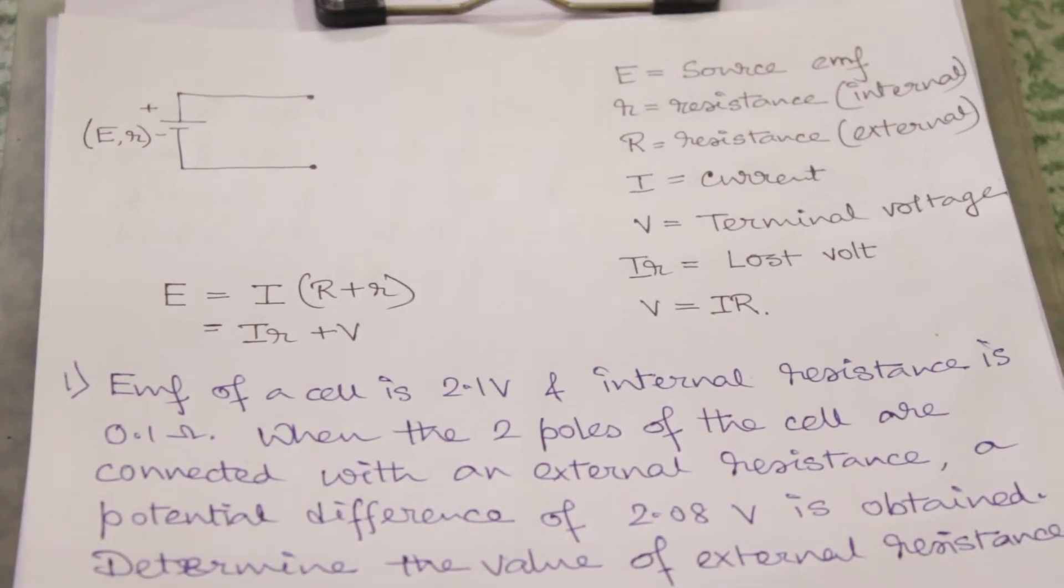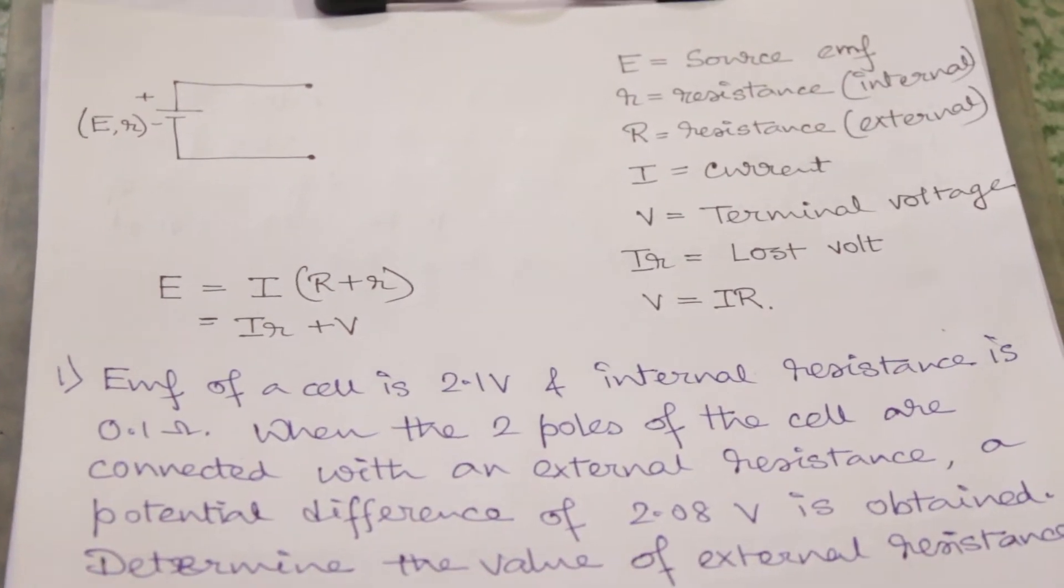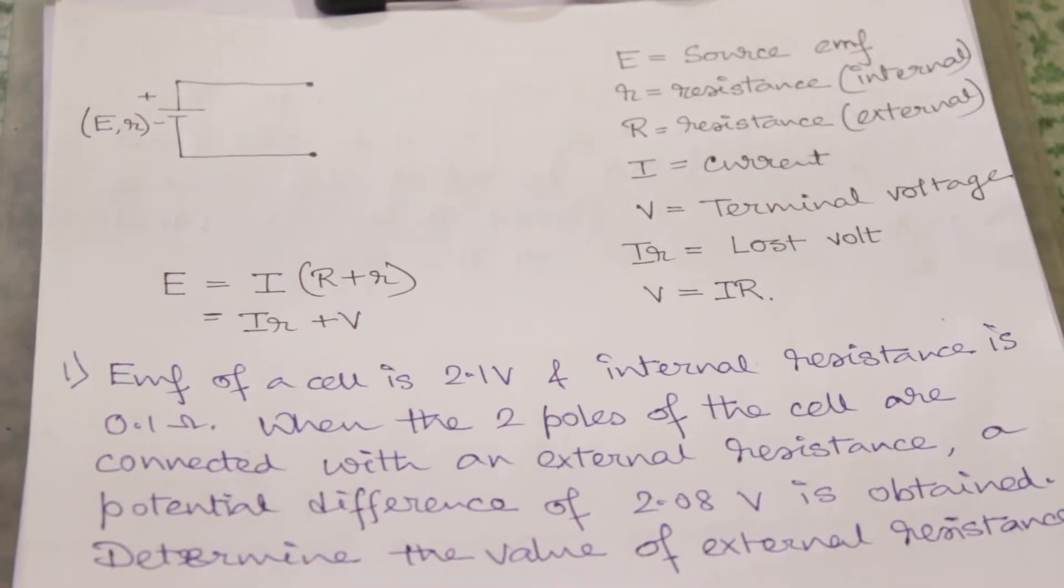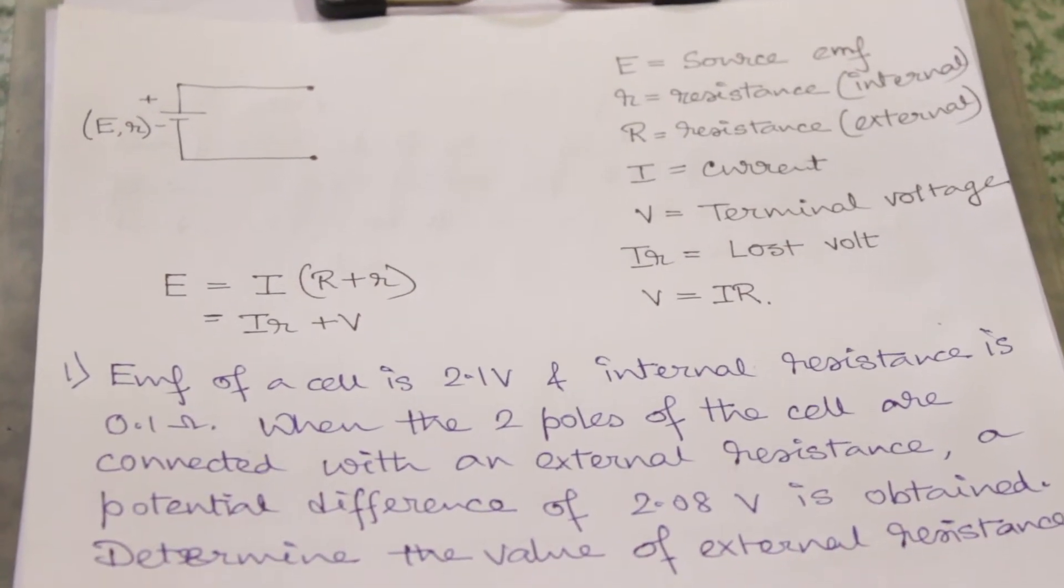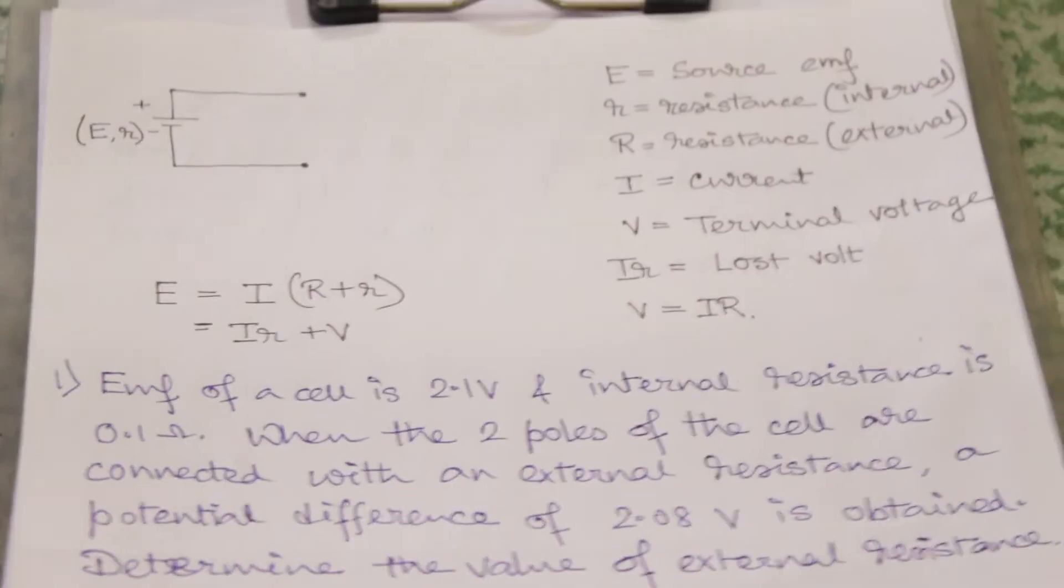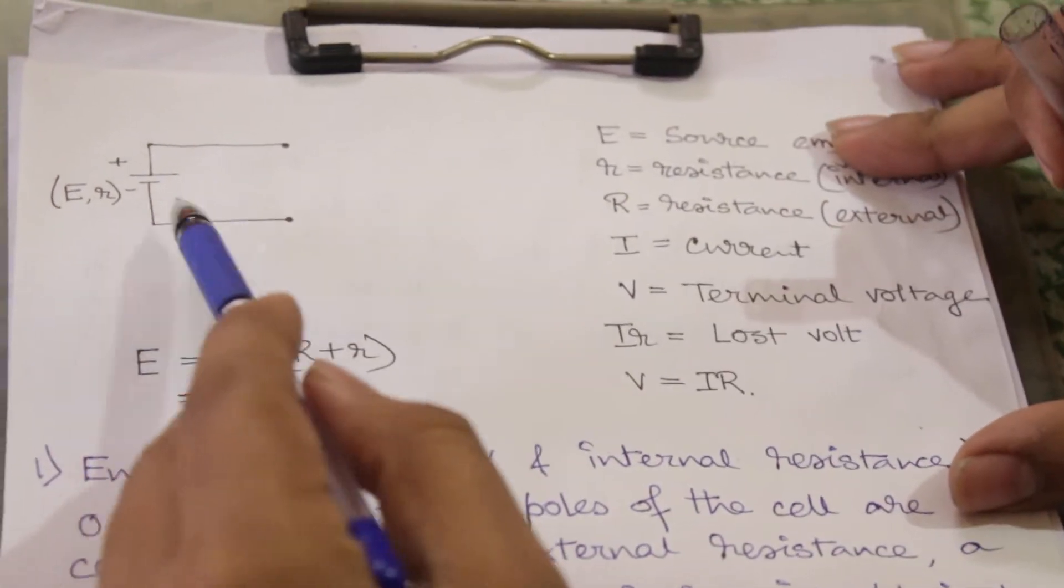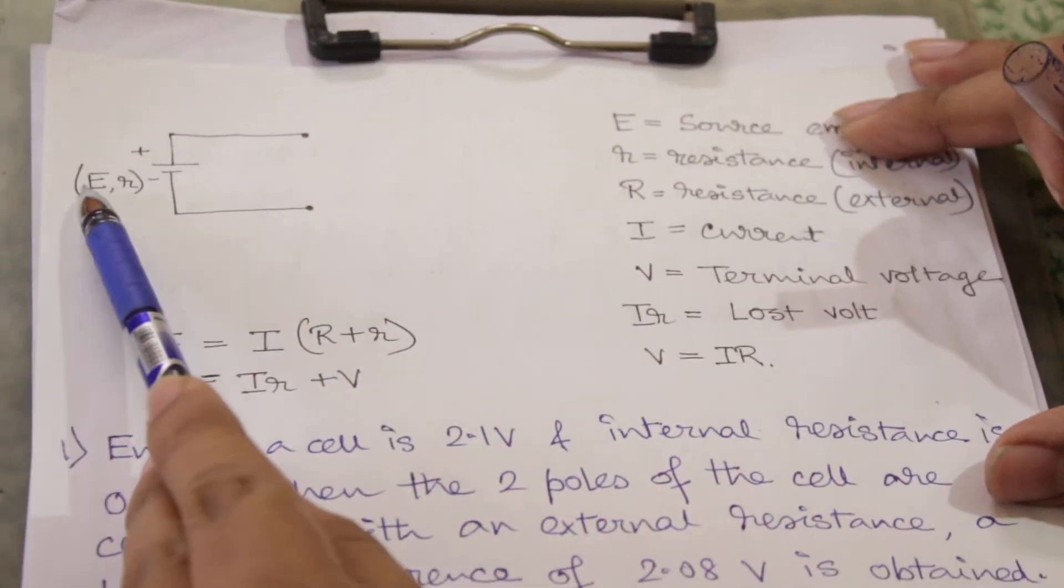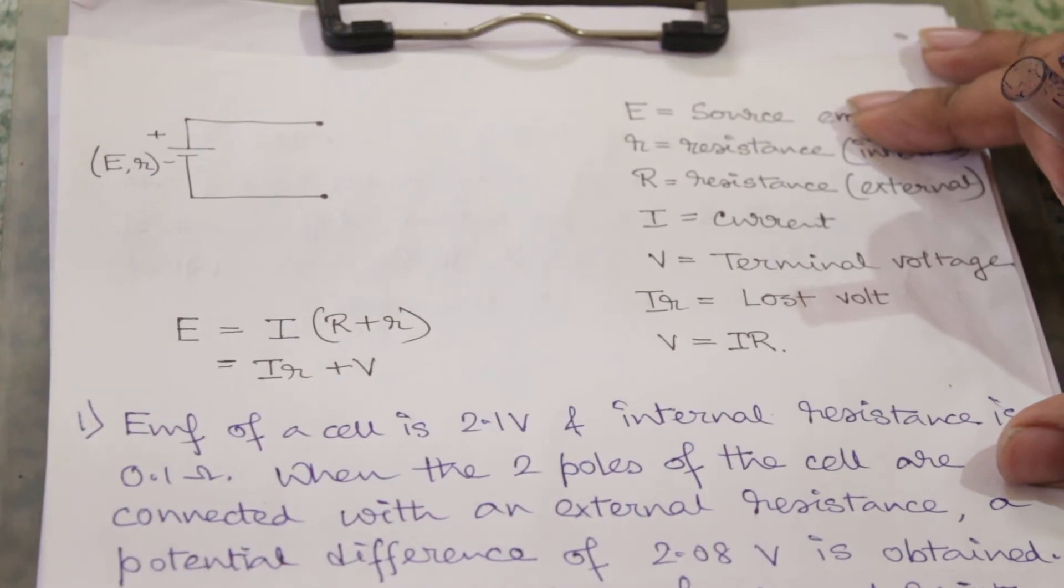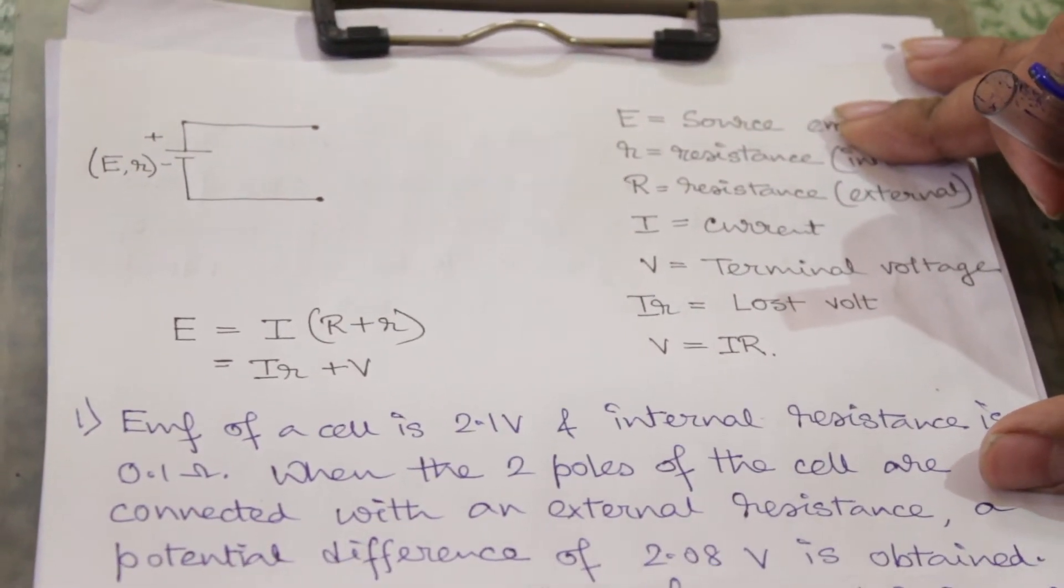Hey guys, welcome to our channel Learn to Win. Today our topic is the equations of an electric cell or battery. So let's start. This is an electrical cell. E denotes its EMF and r denotes its internal resistance.